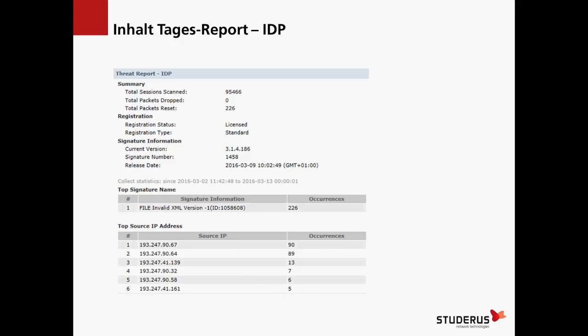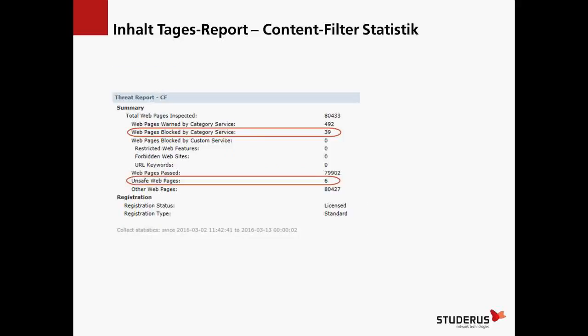Wenn man IDP einsetzt, ist es interessant zu sehen, was erkannt und blockiert worden ist – was für Source-IPs der Grund waren, welche Signatur angeschlagen hat, und was das Zielsystem war, also welche IP-Adresse das Ziel des Angriffs war. Im Content-Filter-Bereich sieht man, wie viele Seiten der Kategorieservice blockiert hat, oder wie viele Unsafe Webpages erkannt worden sind.